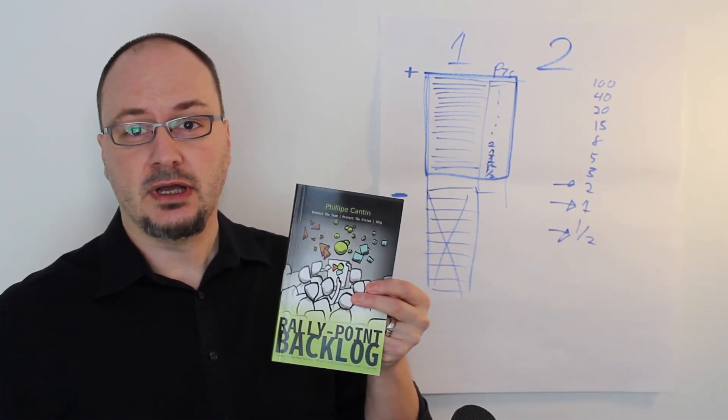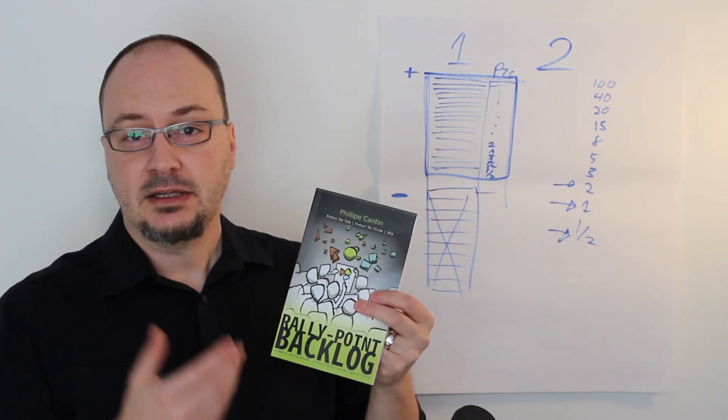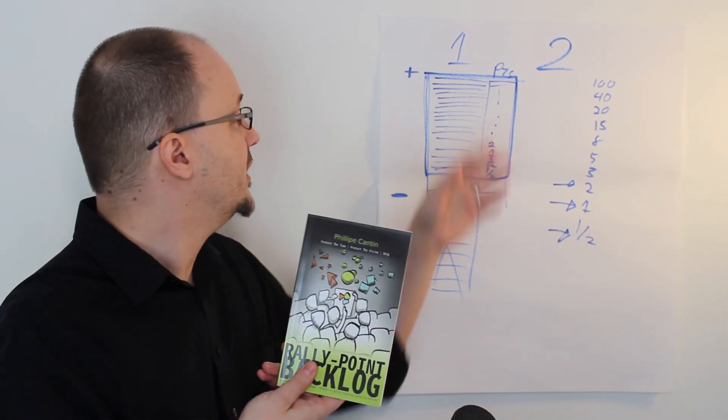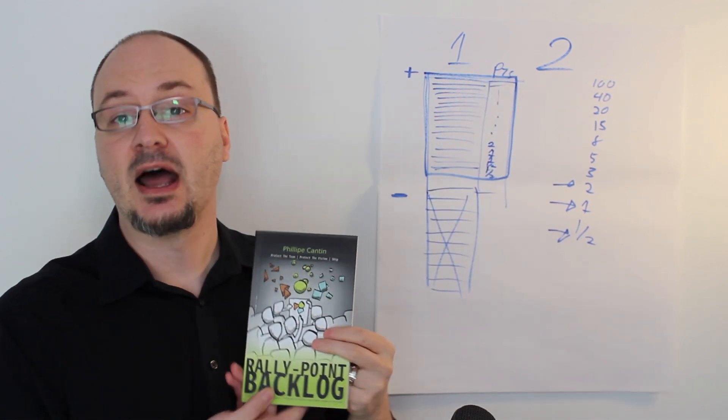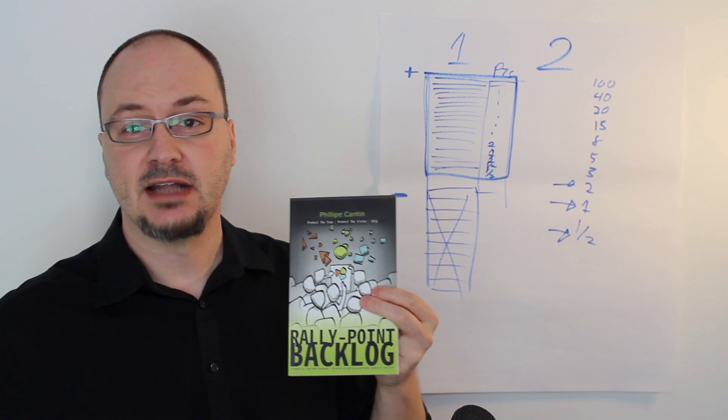Also, in my book, Rally Point Backlog, I have all troubleshootings for step one, troubleshootings for step two, and for using the rapid estimation tool. This is on Amazon. You can find it in a paper form or as an ebook.